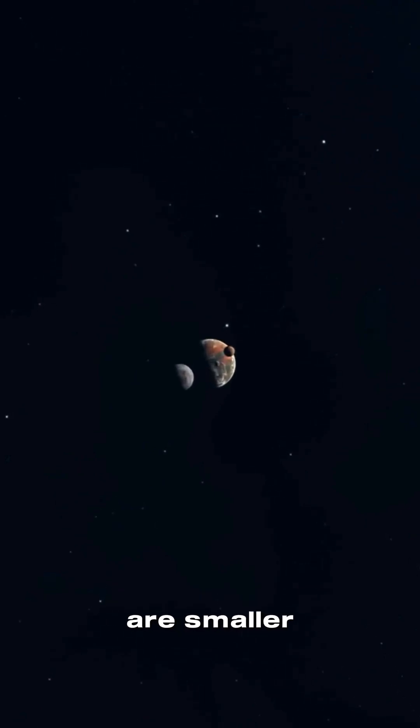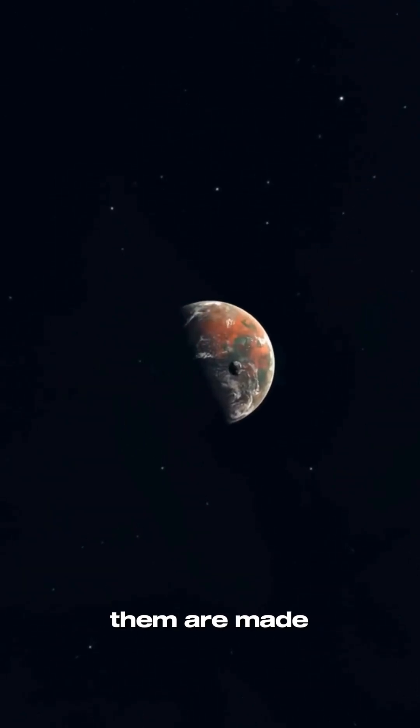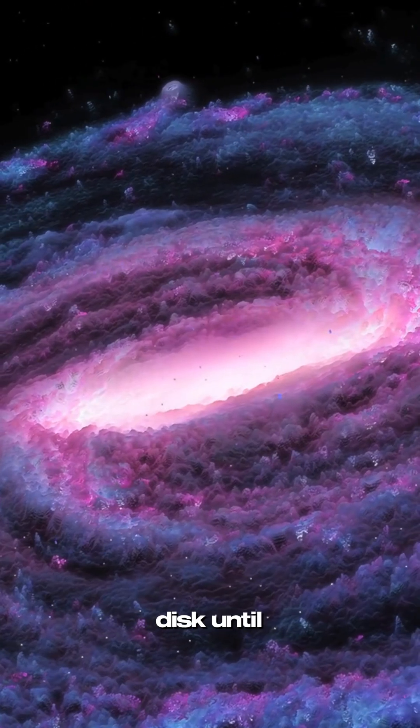Some of these exoplanets are smaller than Earth, while others are huge gas giants. But all of them are made of the same stuff: dust.